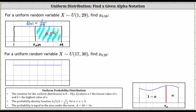We'll set up an equation involving the area of the rectangle and then solve for X sub 0.59. The area of the rectangle equals the base times the height. The base is equal to the value on the right minus the value on the left, which in this case is 29 minus X sub 0.59, times the height, which is 1/28. This must equal 0.59, the area.